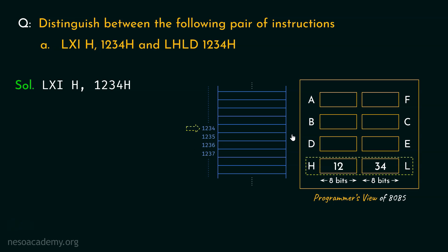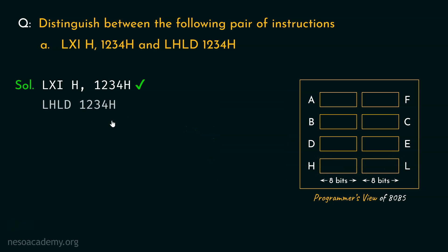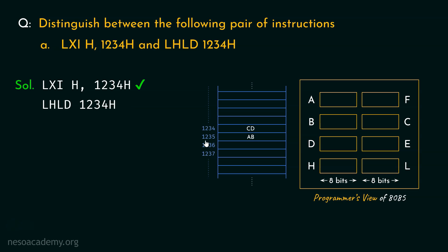Now let's focus on the second instruction: LHLD 1234H. LHLD stands for 'load HL register pair using direct addressing.' We are sending the initial address in the instruction itself as a 4-digit hexadecimal, which is 16-bit binary. For this example, suppose memory locations 1234 and 1235 contain the values CD and AB respectively.